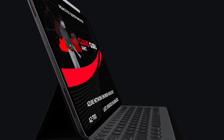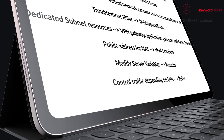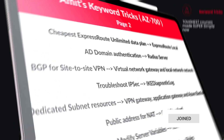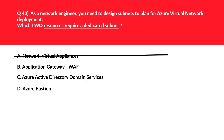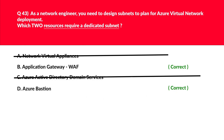Let's now look at option C, that is Azure Active Directory Domain Services. Azure Active Directory Domain Services falls under the category of identity, which does not require a dedicated subnet — therefore this seems to be incorrect. Azure Bastion, on the other hand, needs a dedicated subnet. We've arrived at two answers — the correct ones are marked with yellow and the incorrect ones with red. We'll lock B and D as the correct answer.